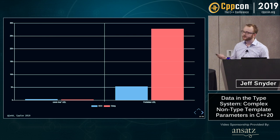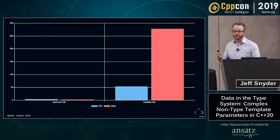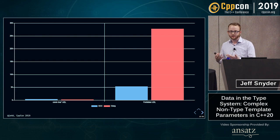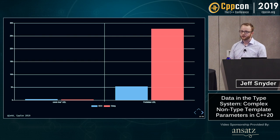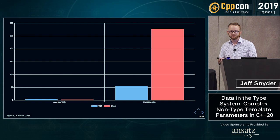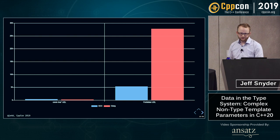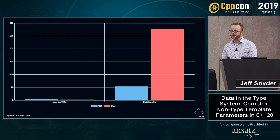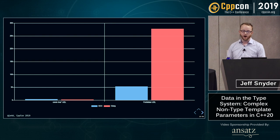This isn't that surprising. A template parameter and template argument are fairly substantial objects inside a compiler — you would expect them to have a fairly heavy representation. But people want to do this anyway, so let's take a deeper look at why.